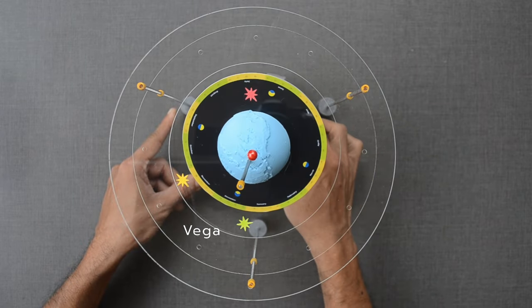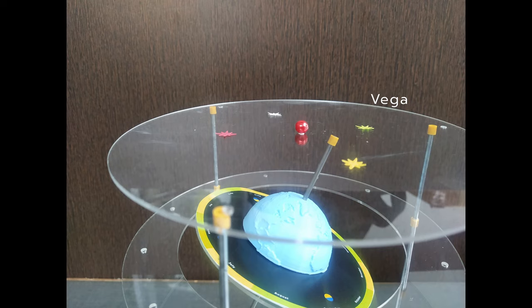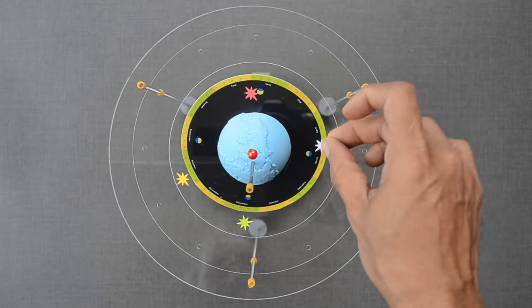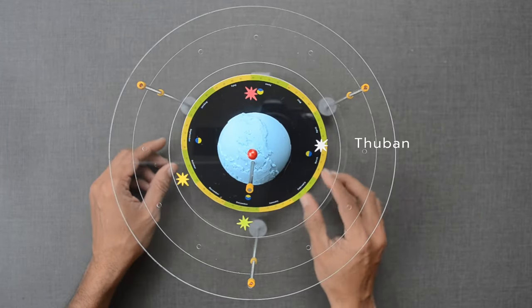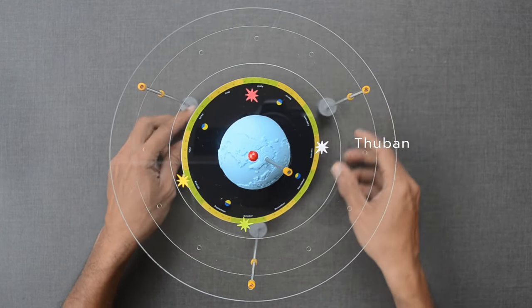In another 4000 years, Vega will be the new pole star. And 5000 years later, Thuban will be the pole star.